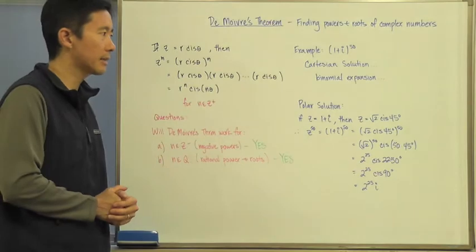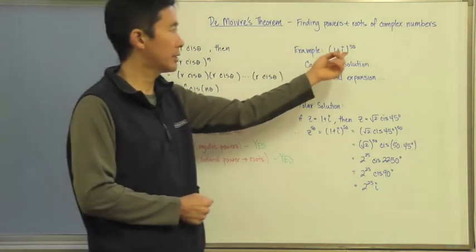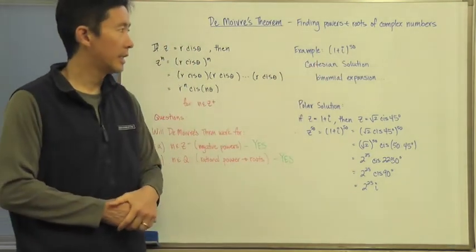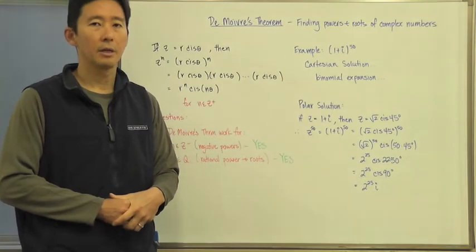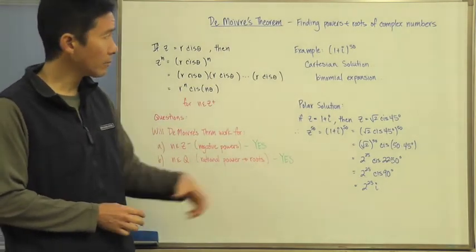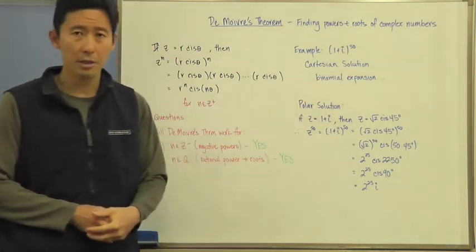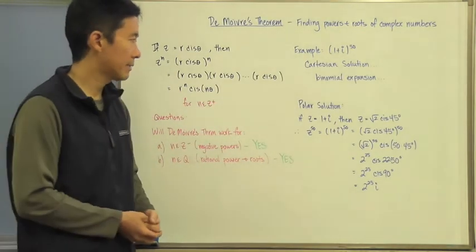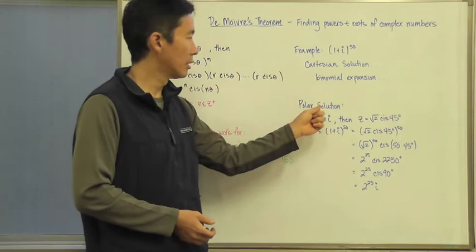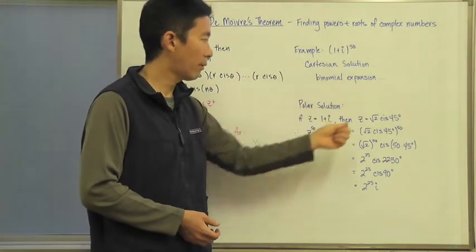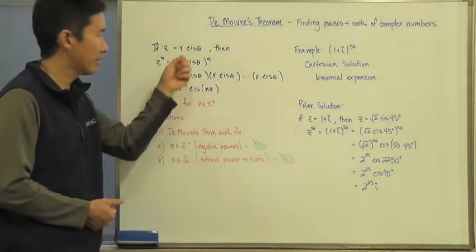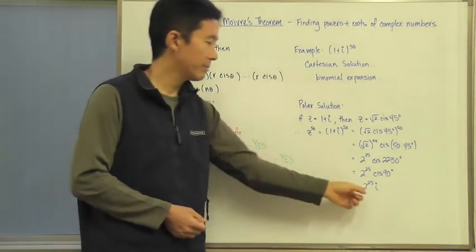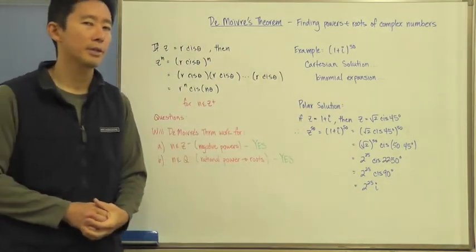So notice the nice thing now, especially if we wanted to find the powers of complex numbers, especially very large powers of complex numbers, then if we look at the complex number in its polar form, we can use De Moivre's theorem to very simply come out with an expression for that.